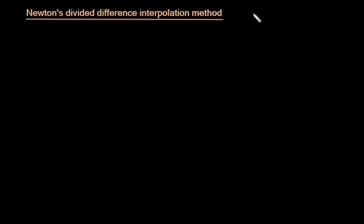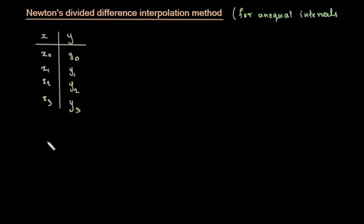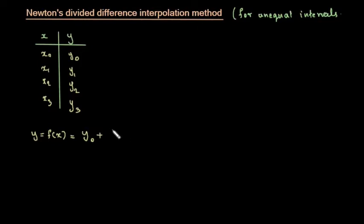Newton's divided difference interpolation method is used for unequal intervals. We will be provided with data points x and y. The Newton's divided difference interpolation formula is: y = f(x) = y₀ plus (x minus x₀) times Δy₀...